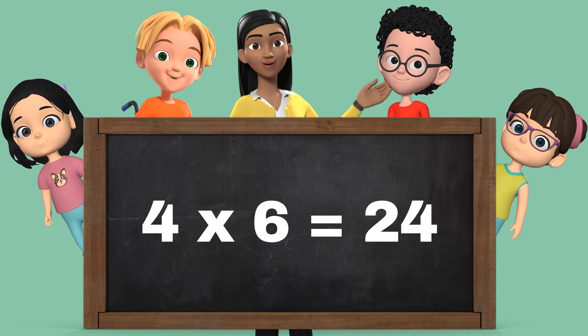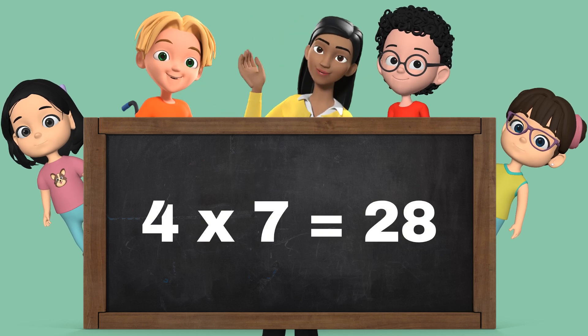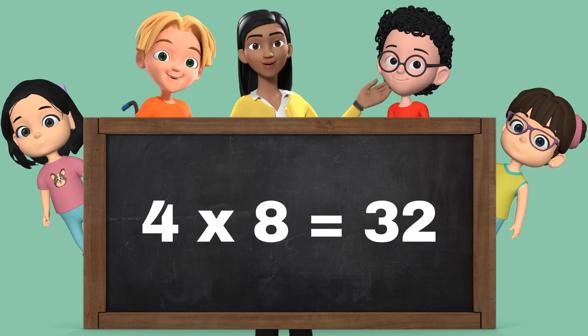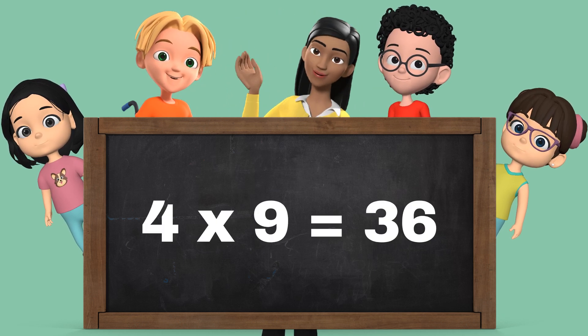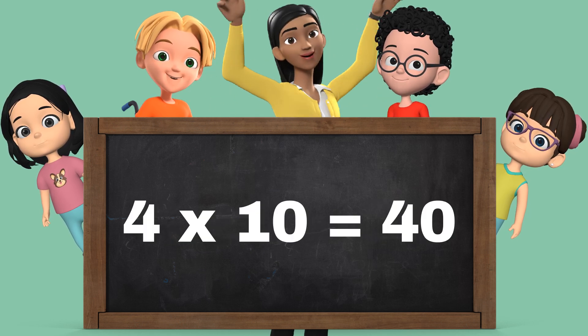4 sixes are 24, 4 sevens are 28, 4 eights are 32, 4 nines are 36, 4 tens are 40.